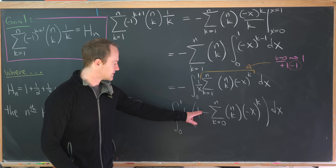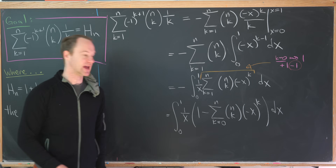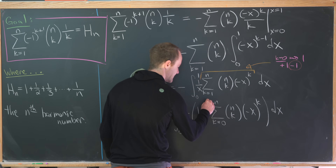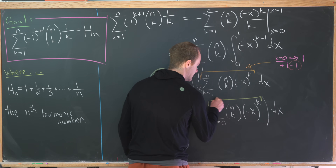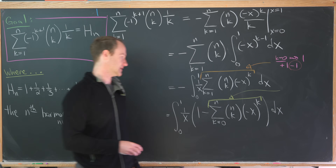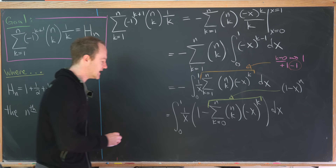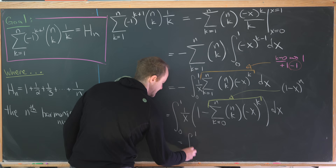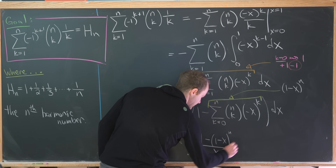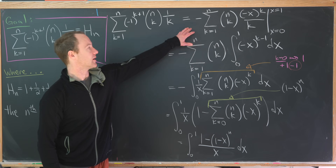The sum from k=0 to n of n choose k times (-x)^k is exactly the binomial expansion of (1-x)^n. So the entire expression simplifies to the integral from 0 to 1 of [1 - (1-x)^n] / x dx.